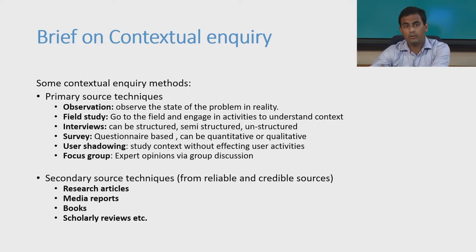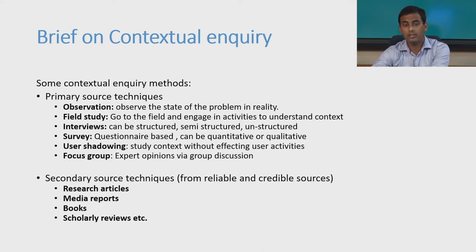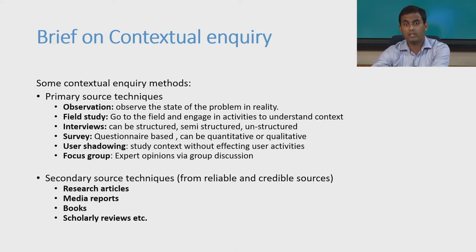Another contextual enquiry method under primary source techniques is user shadowing. In certain scenarios where you cannot affect or disturb the day-to-day activities of the user, you do shadowing — you follow the user without informing them of your intent or what information you are collecting. It also needs to be ethically approved to conduct such studies. The last primary source technique is focus group discussion, where you discuss with field and domain experts about the scenario and try to grasp the problem, the underlying context, and use that information as first-hand experience data.